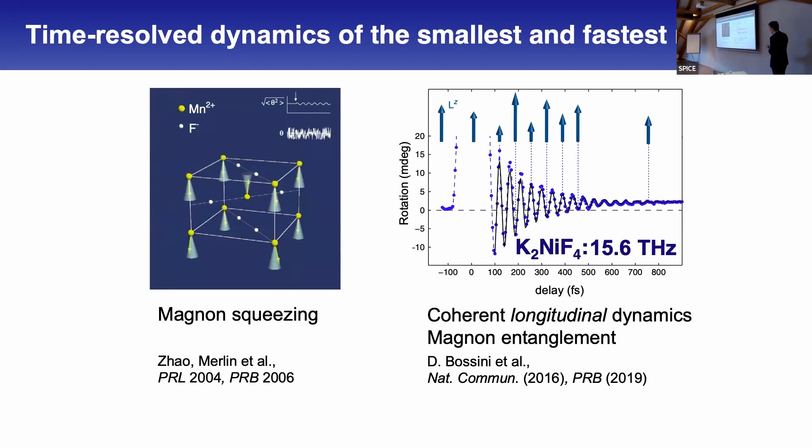This is what people studied experimentally. It was first in the early 2000s, where they interpreted this as magnon squeezing, and later a much more beautiful experiment by Davide Bossini, who will also talk tomorrow, reinterpreted this as longitudinal dynamics featuring magnon entanglement. For me it was lots of inspiration to enhance this amplitude until the system becomes unstable.